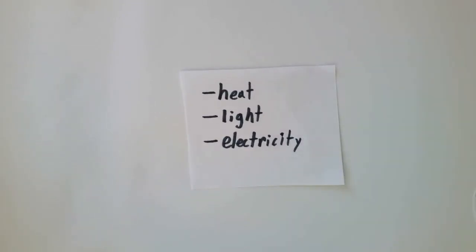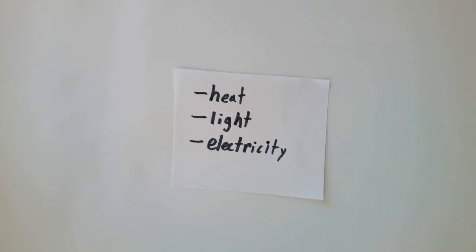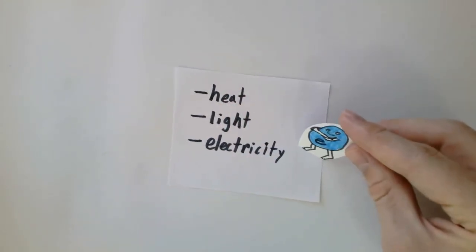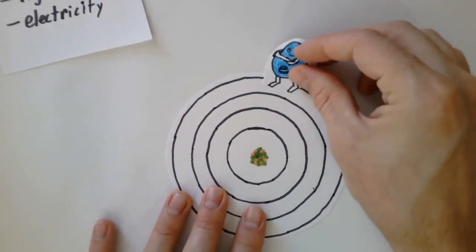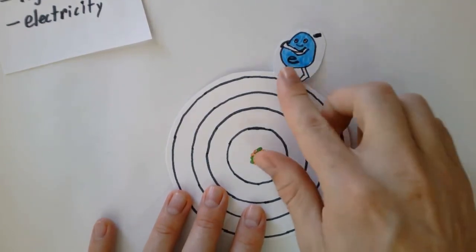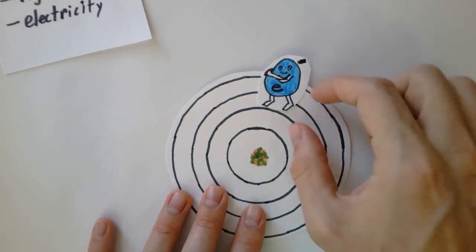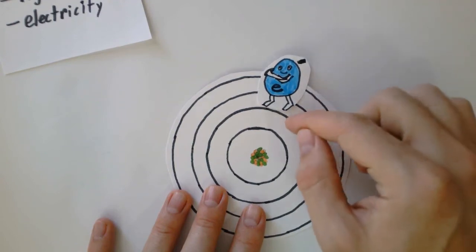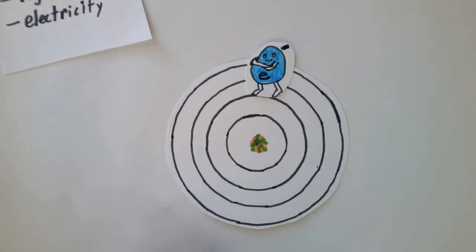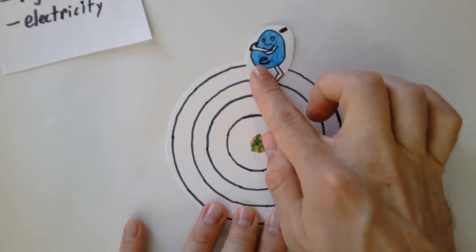Quick summary: electrons jump up when they receive energy in the form of heat, light, or electricity — the technical term is that the electron gets excited, and when excited it jumps up, increasing in energy level. When it jumps back down it releases that energy as a photon, which is a specific packet of energy corresponding to the distance the electron jumped. Finally, every atom has a unique distance between its energy levels, which corresponds to a unique pattern of light emitted when electrons get excited and jump back down, releasing that energy.